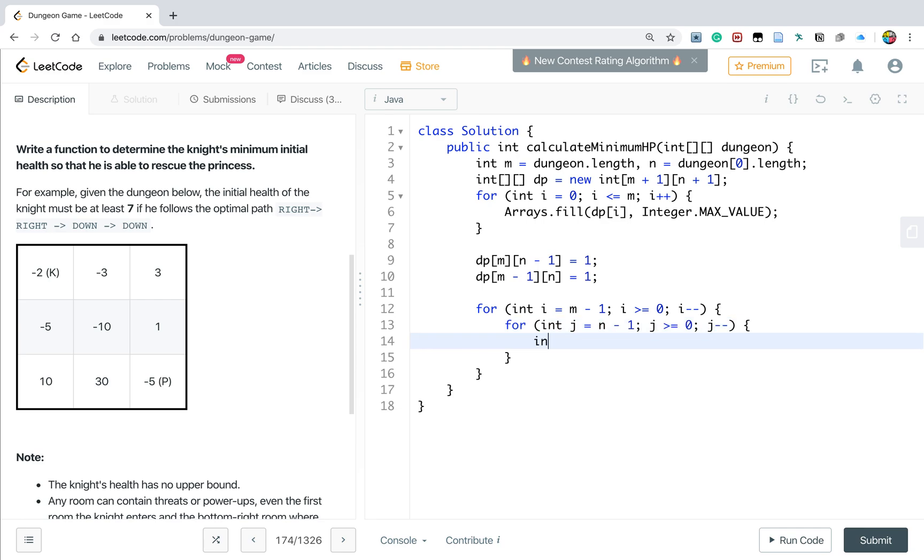We first try to get the minimum hp, which is equal to math minimum dp[i+1][j] and dp[i][j+1], we minus the dungeon[i][j].